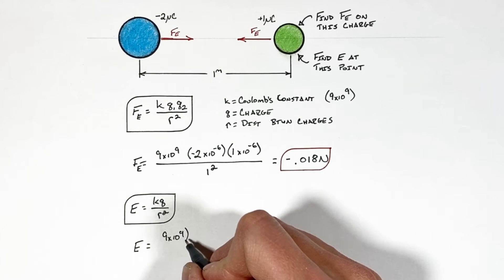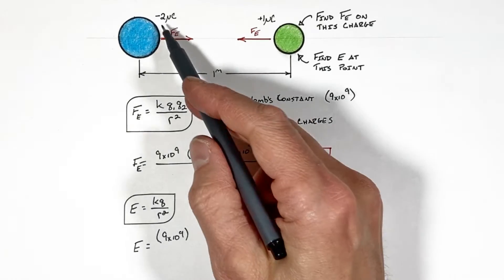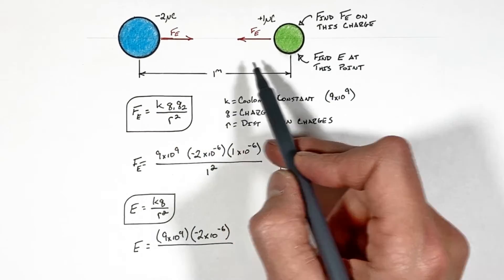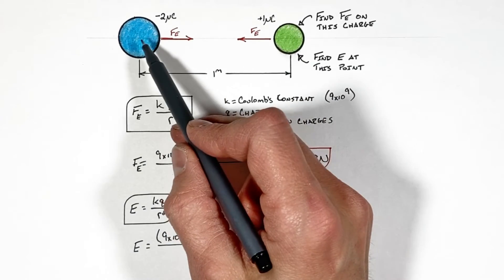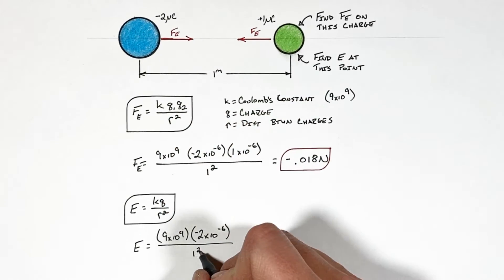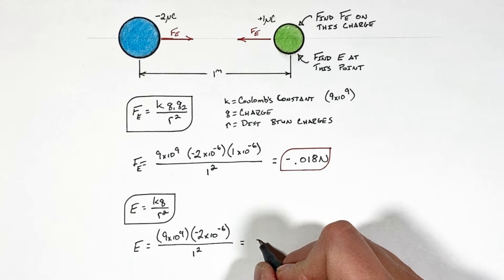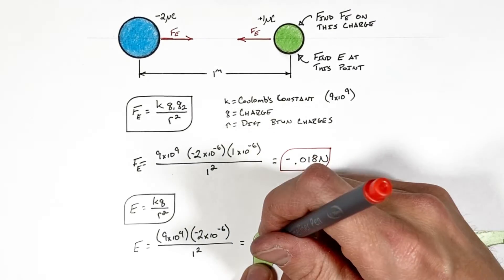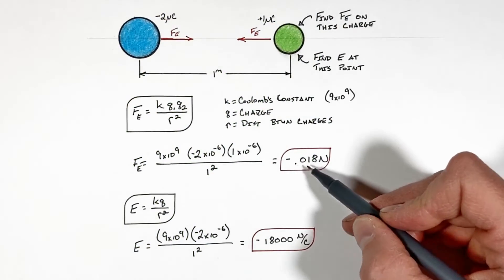Again using Coulomb's constant multiplied by the magnitude of this charge over the distance between this point and our two micro coulomb charge. And this gives an electric field of negative 18,000 newtons per coulomb.